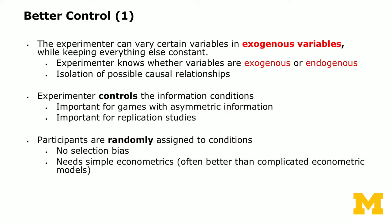How is it that experimentalists get to have better control over the data generated? This is achieved by varying certain variables in an exogenous fashion while keeping everything else constant. As an experimenter, you know whether variables are exogenous or endogenous, and you can isolate the possible causal relationships.